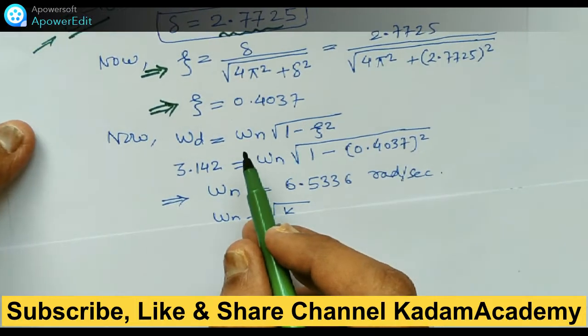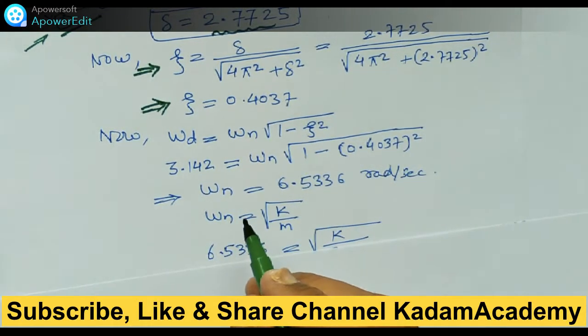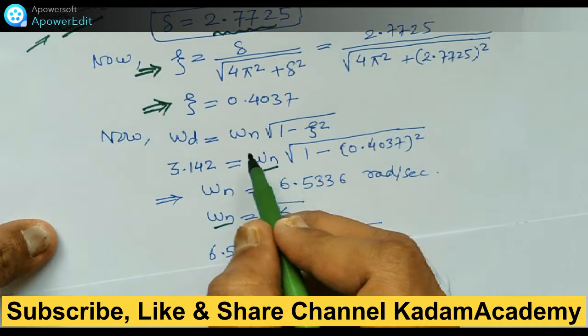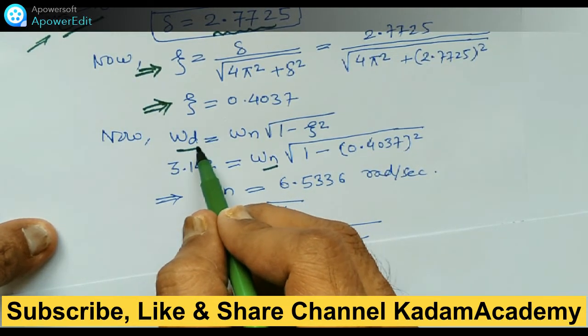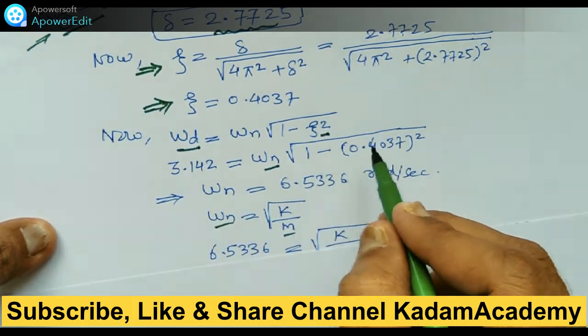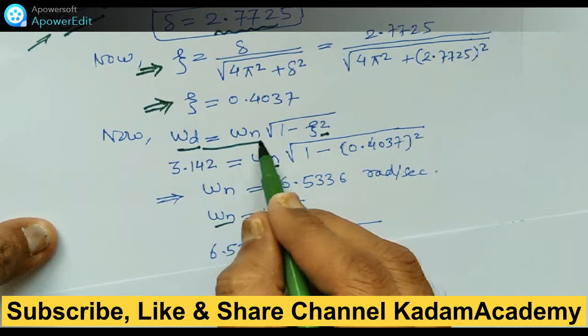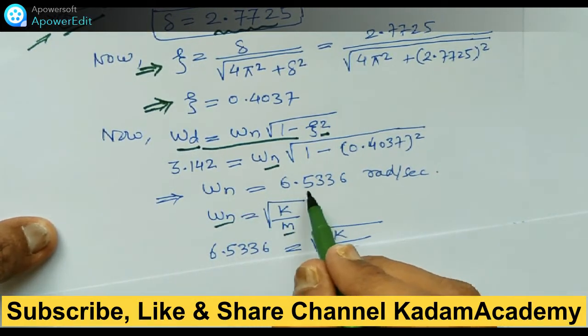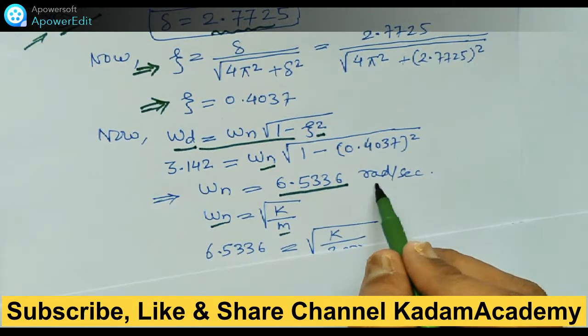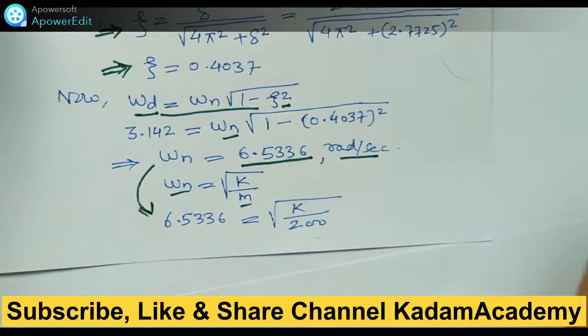Once we've got the damping factor, we have to find omega_n to calculate k. We know omega_d = 3.142 and zeta = 0.4037. Putting these values in the formula, we can find omega_n = 6.5336 rad/s.